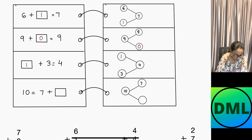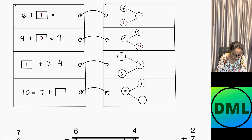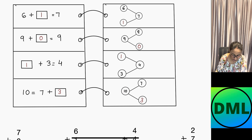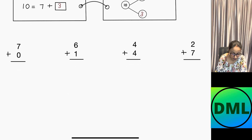Let's see the next example: 10 equals 7 plus blank. From 7 I have to make 10 — counting on: 7, 8, 9, 10 — I need 3 more numbers. So I write down 3, because 7 and 3 add up to 10. In another way, you can say that 10 minus 7 equals 3.